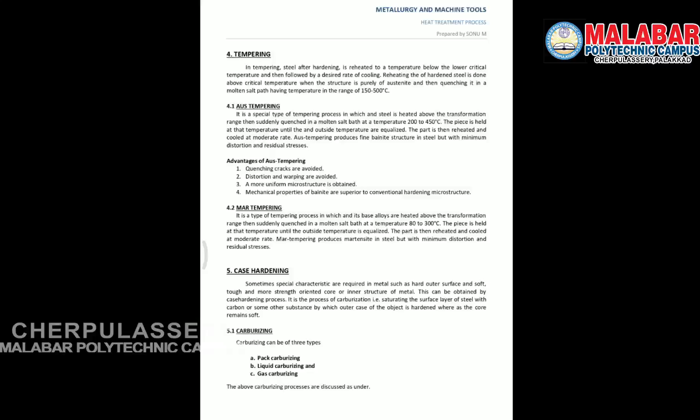The next one is tempering. After hardening, we do the tempering process to reduce brittleness. The metal is heated to a particular temperature and cooled down at a controlled rate. Tempering is made by two methods: austempering, which produces a bainite structure, and martempering, which produces a martensite structure. This is based on the transformation range of steel.